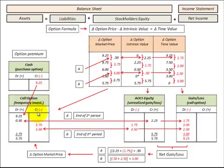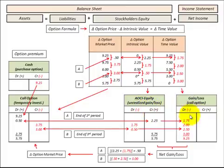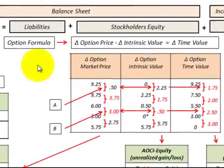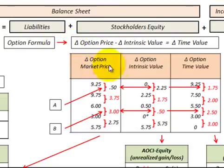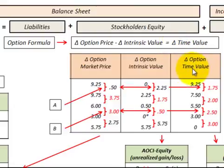We can match our debits and credits — the changes between our call option account and our other comprehensive equity account (the unrealized gain or loss) — and that will balance with any gain or loss recognized on the call option. In summary, the call option formula is: the change in option price minus the change in intrinsic value of the option equals the change in the time value of the option.